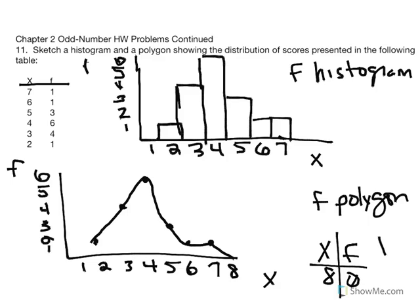Similarly, we consider the score below 2. A score of 1 is not part of our data set, so its frequency would also be 0. We bring it down to the abscissa at 1, recognizing that 1 is not part of the data set and therefore has a frequency of 0. Now we have properly constructed our polygon. If we overlap the original histogram with the polygon, we would see the exact same shape.